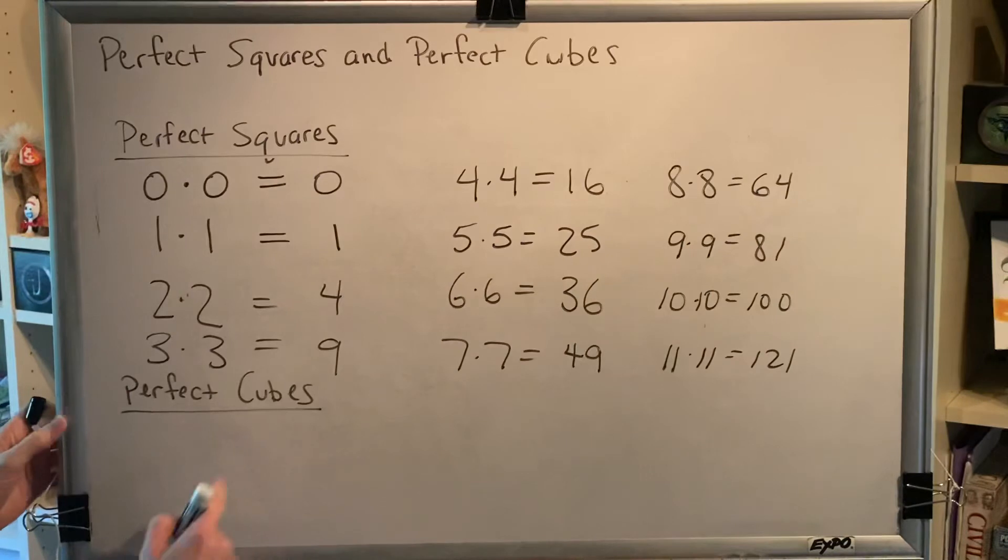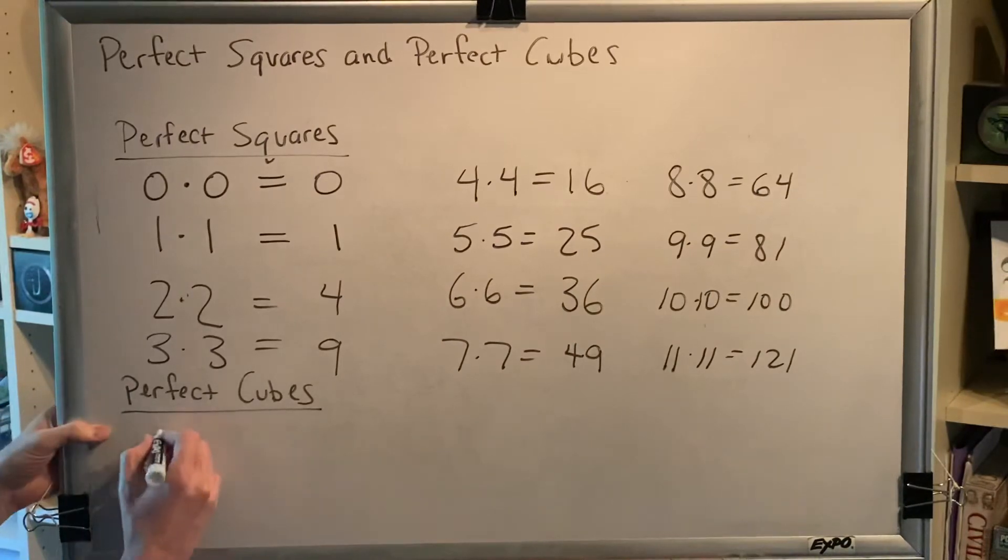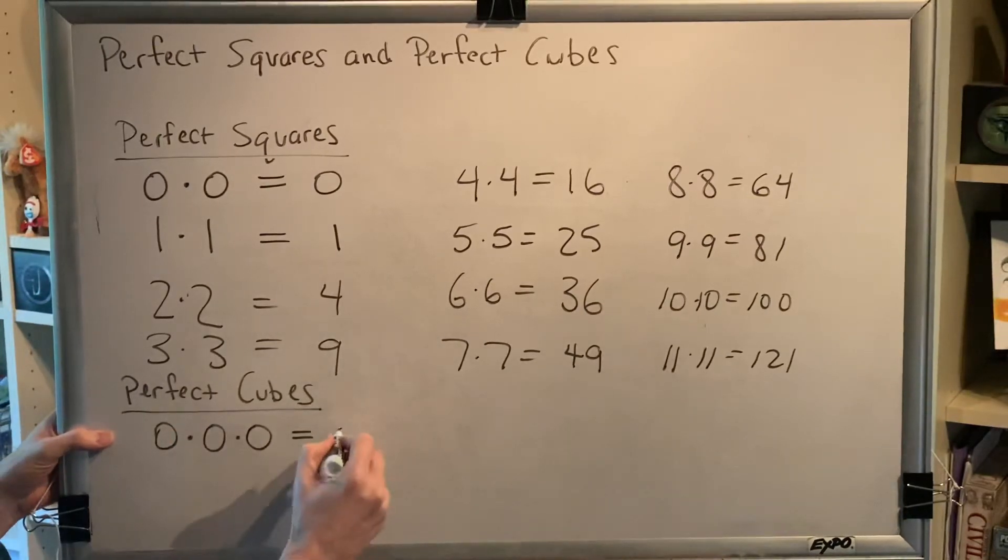Alright, so now we move on to the perfect cubes. Same idea, except we're multiplying a number by itself a total of three times. Zero times zero times zero equals zero. One times one times one equals one.